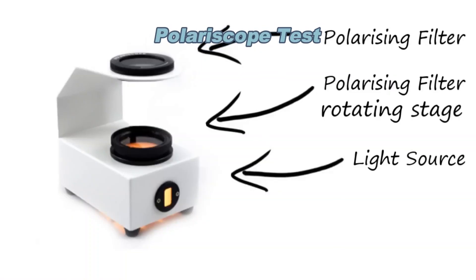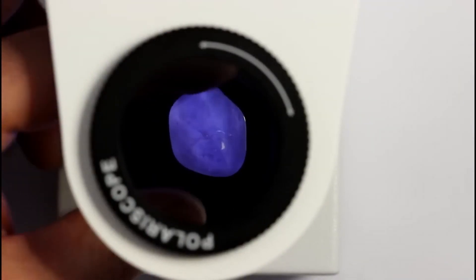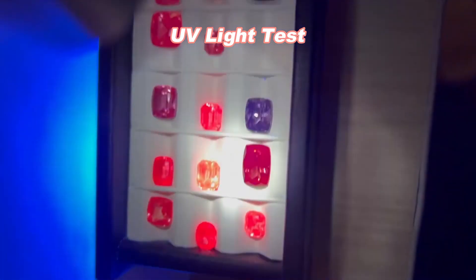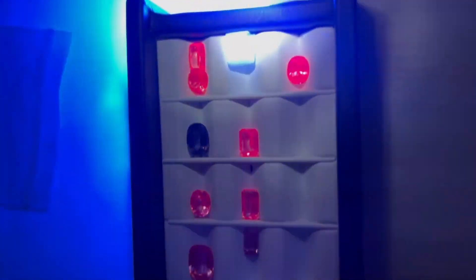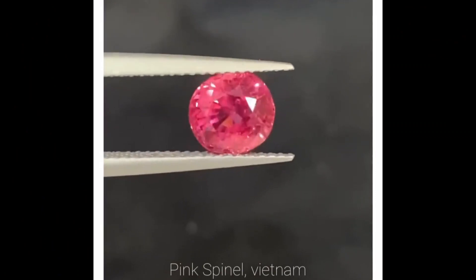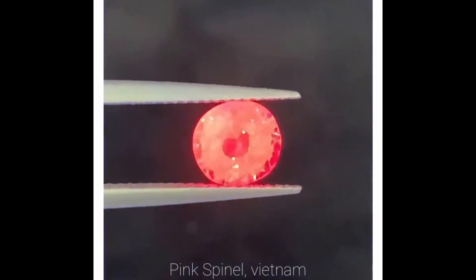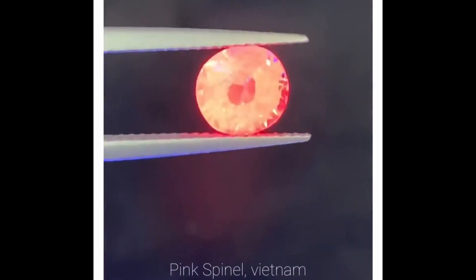Polariscope Test: A polariscope can help identify strain patterns and anomalous double refraction in the spinel, which can be indicative of its authenticity. UV Light Test: Expose the rough spinel to ultraviolet (UV) light. Some spinels may exhibit fluorescence under UV light, although not all spinels do. The absence of fluorescence does not necessarily indicate a fake spinel.